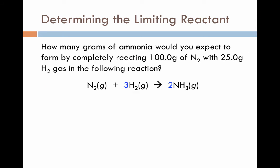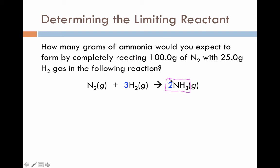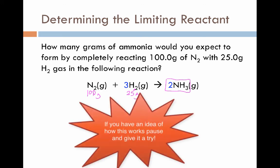Let's put this process into play with the same question: how many grams of ammonia would we expect to form by reacting 100 grams of nitrogen with 25 grams of hydrogen gas? We have a starting value for nitrogen and a starting value for hydrogen. At first glance, we have a lot less hydrogen gas than nitrogen, and you might be tempted to say hydrogen must be our limiting reactant. But keep in mind the nitrogen is about 14 times heavier, and we're using hydrogen three times faster. It is not obvious which is limiting — the only way to figure this out is by doing stoichiometry.